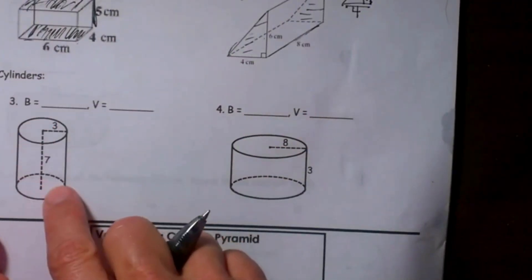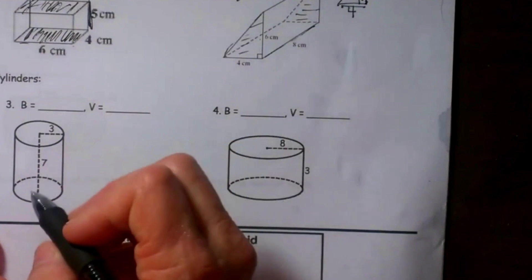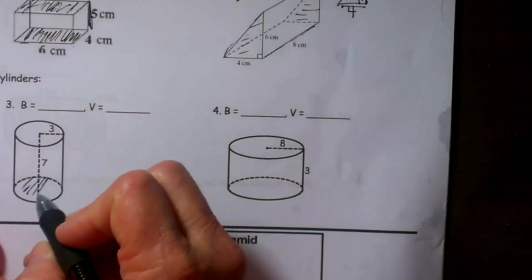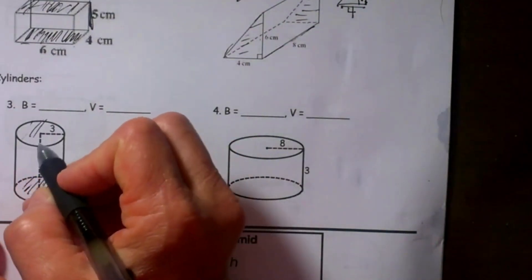So let's look at one that's a cylinder. What is our base on a cylinder? Our base on a cylinder is just a circle.